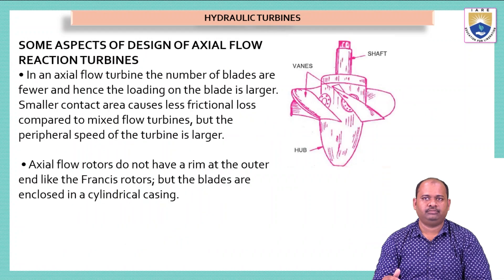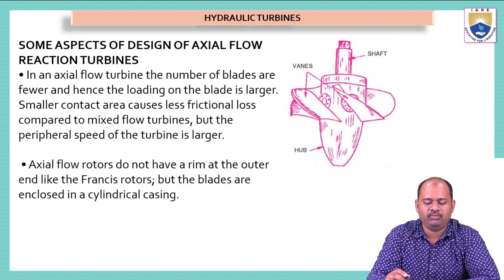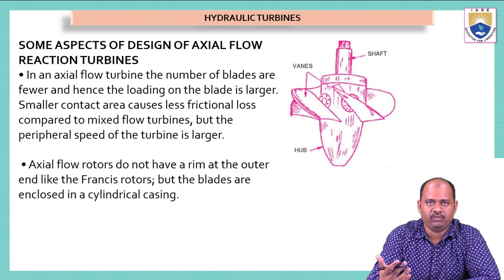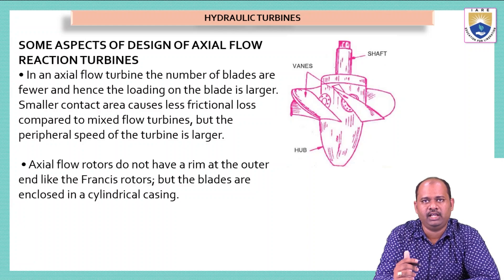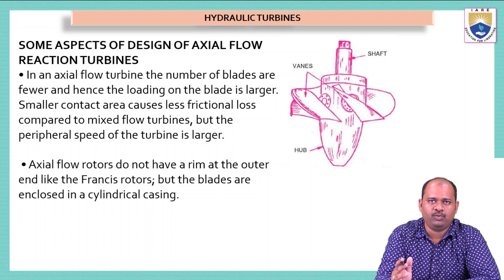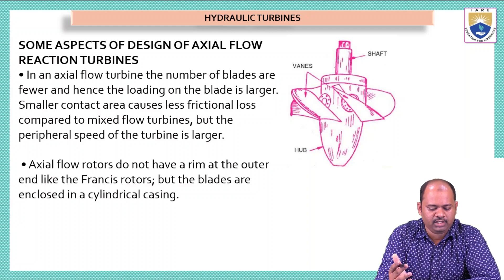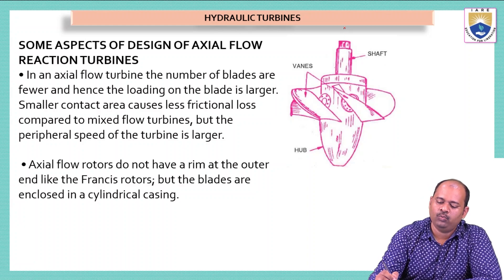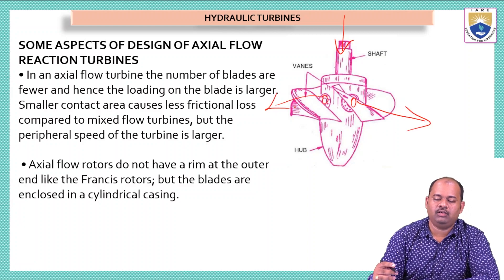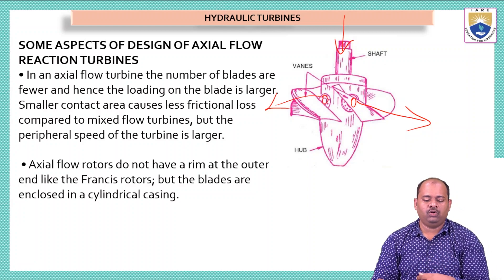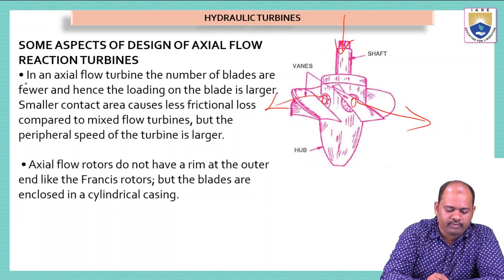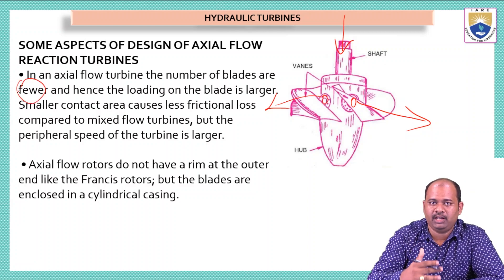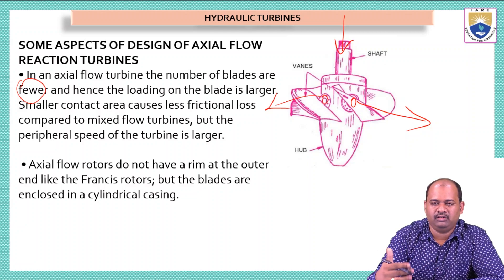In the Francis turbine, water enters in the radial direction and exits from the center of the shaft in the axial direction. In the axial flow turbine the number of blades is fewer, hence the loading on each blade is larger. Smaller contact area causes less frictional losses compared to mixed flow turbines, but the peripheral speed of the turbine is large. The fewer blades are kept because the flow of water acts in a specific direction, and a small amount of water can make the turbine rotate.